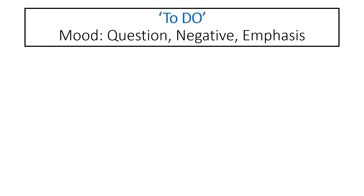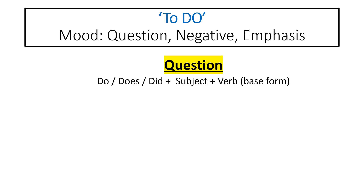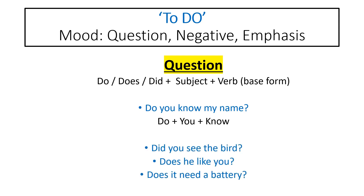'To do' verb forms — do, does, did — indicate mood: they can form questions, negative sentences, or show emphasis. For questions: 'do', 'does', or 'did' is placed first, then the subject, and finally the base form of the verb. For example: 'Do you know my name?' — 'do' first, then 'you', then base form 'know'. More examples: 'Did you see the bird?', 'Does he like you?', 'Does it need a battery?'